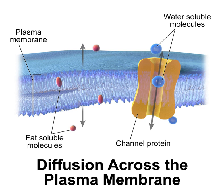The cell membrane, being exposed to the outside environment, is an important site of cell-cell communication. A large variety of protein receptors and identification proteins, such as antigens, are present on the surface of the membrane. Functions of membrane proteins can include cell-cell contact, surface recognition, cytoskeleton contact, signaling, enzymatic activity, or transporting substances across the membrane. Most membrane proteins must be inserted into the membrane: an N-terminus of amino acids directs proteins to the endoplasmic reticulum, which inserts them into a lipid bilayer. Once inserted, proteins are transported to their final destination in vesicles, which fuse with the target membrane.